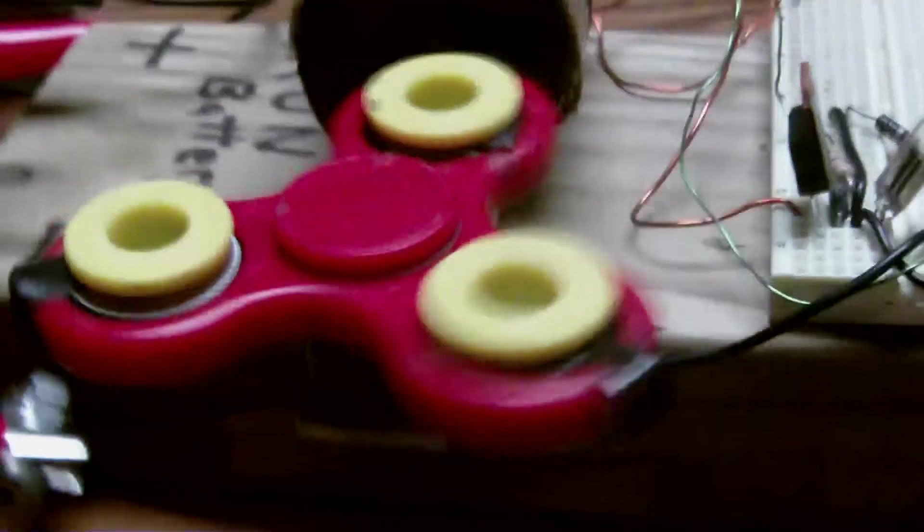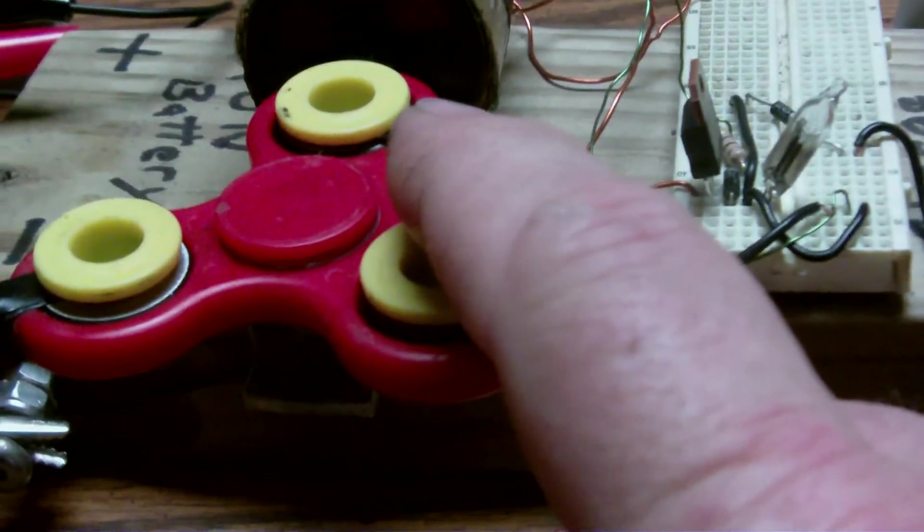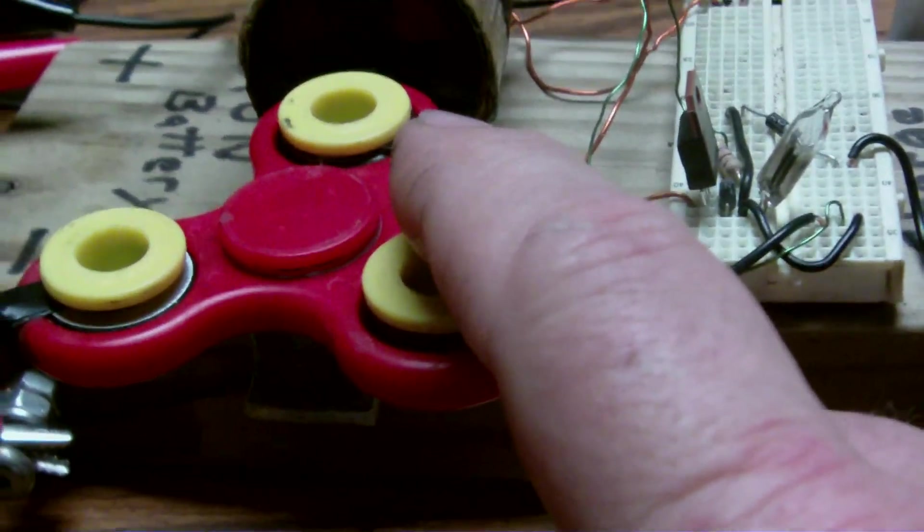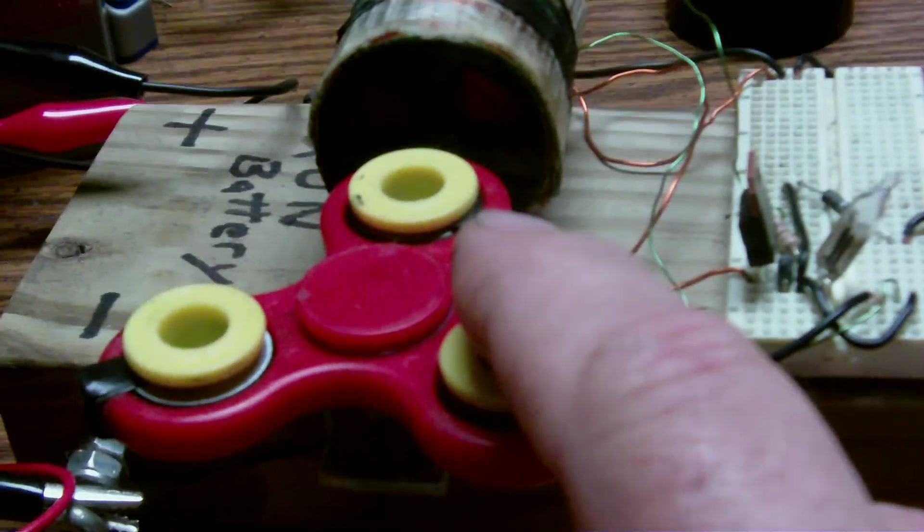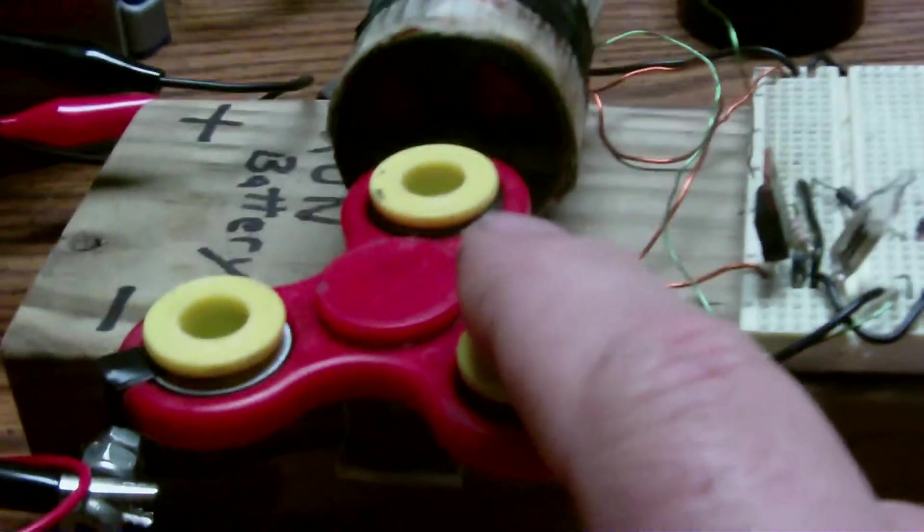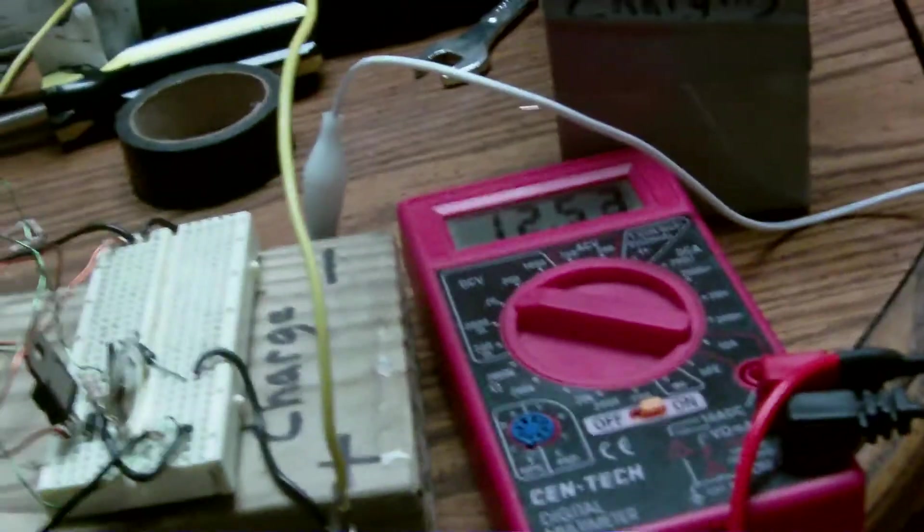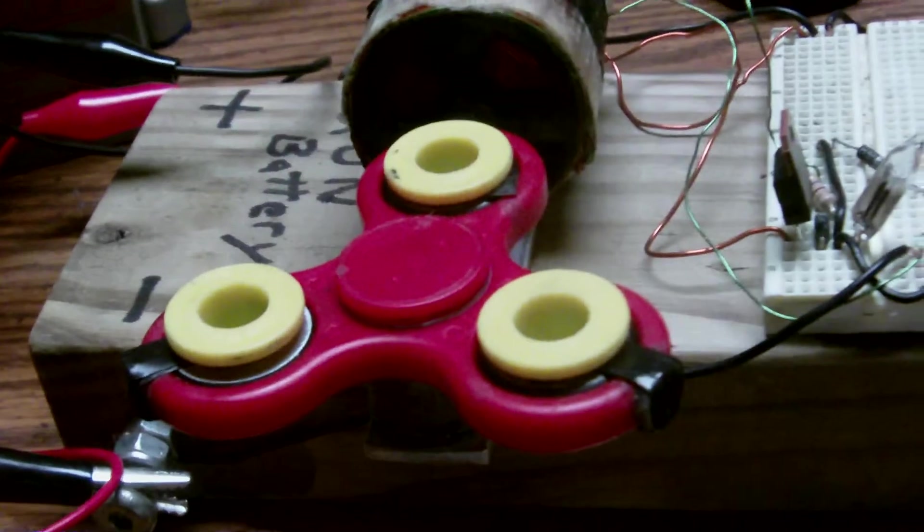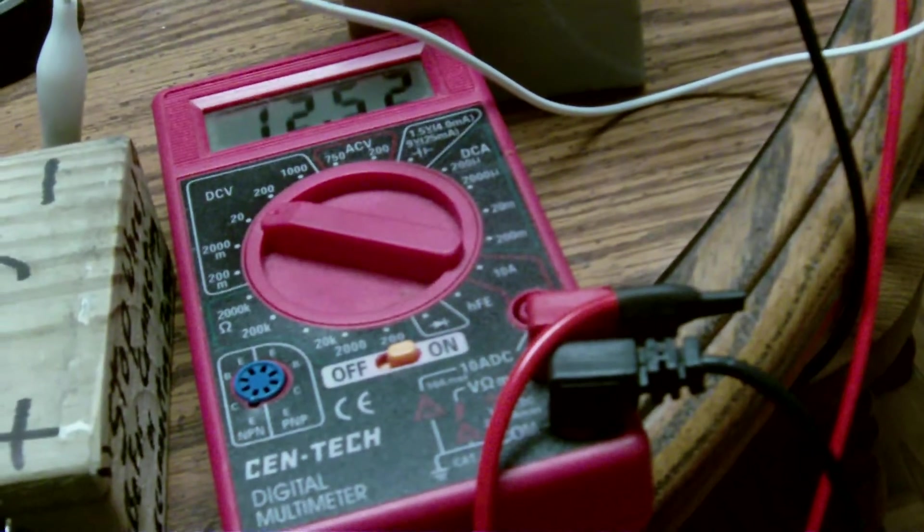Because unlike any other motor, when you put a load on this it doesn't draw more energy, it draws less. The less current you use to pulse the motor, the more radiant energy you get off of the coil to charge the battery. I got videos that I've shown and proven that, and I've seen videos from other people that have proven it.